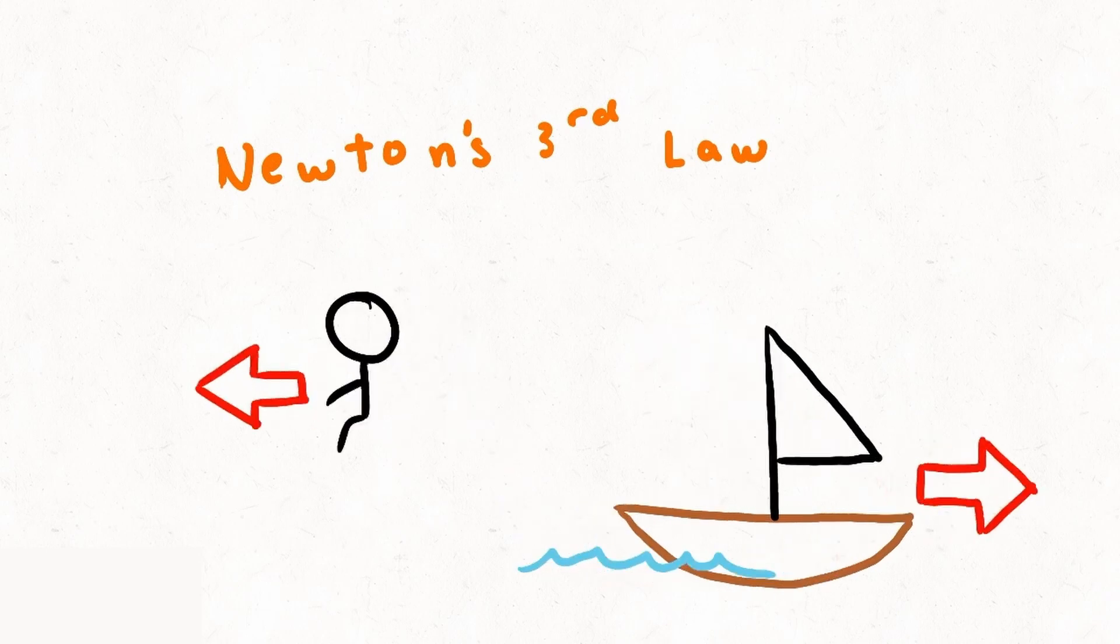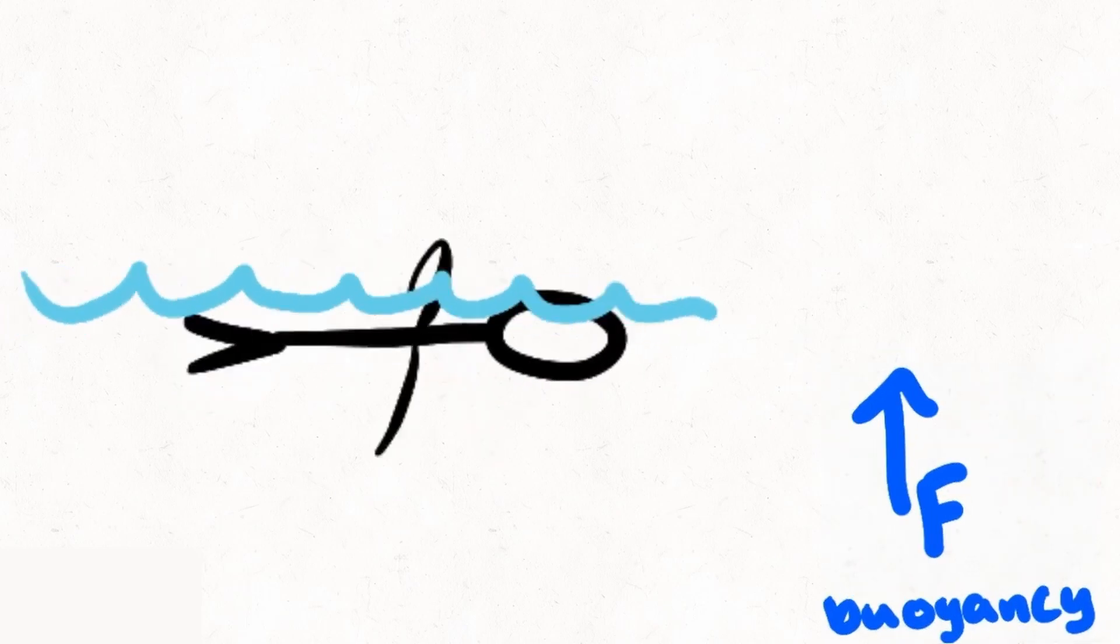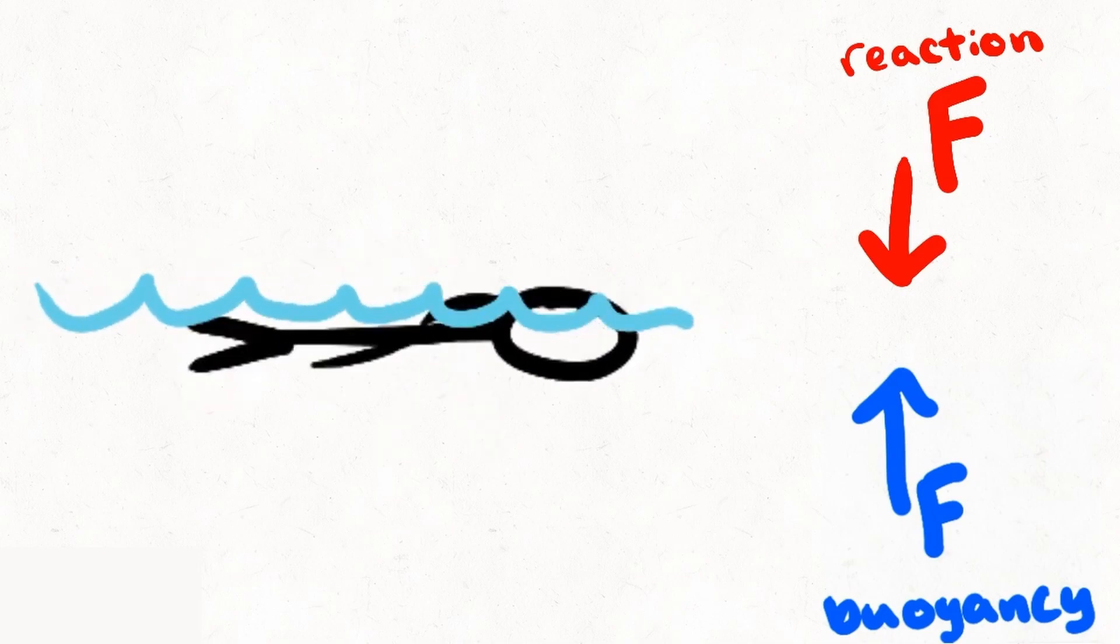Newton's third law states that every action has an equal and opposite reaction. When swimming in water, we can feel a buoyancy force that keeps us afloat. This force, like all others, has an equal and opposite force on the water. This accounts for the change in force exerted on the scale.